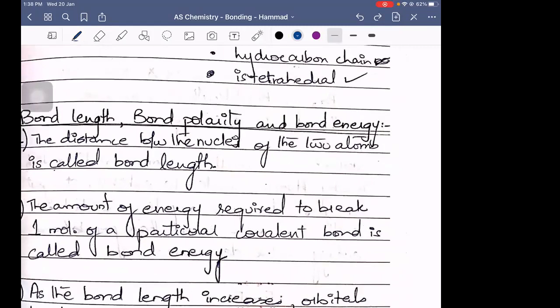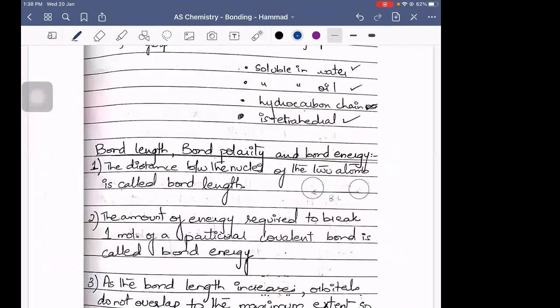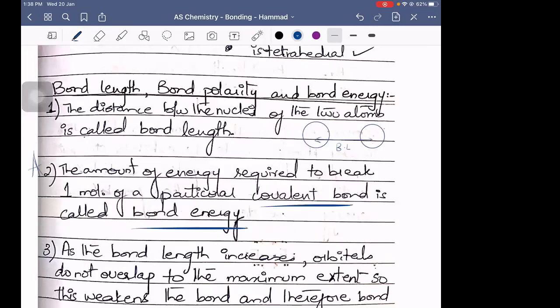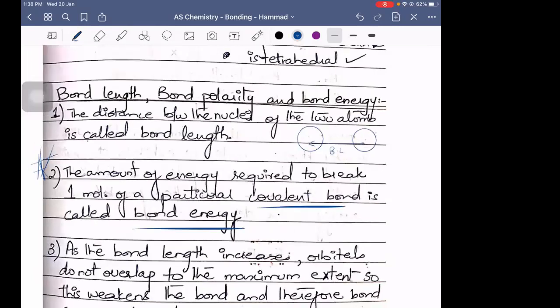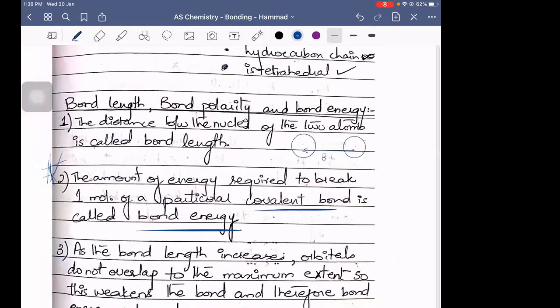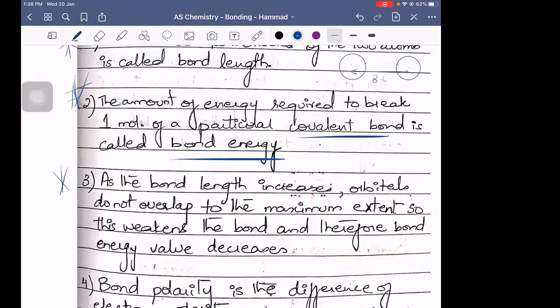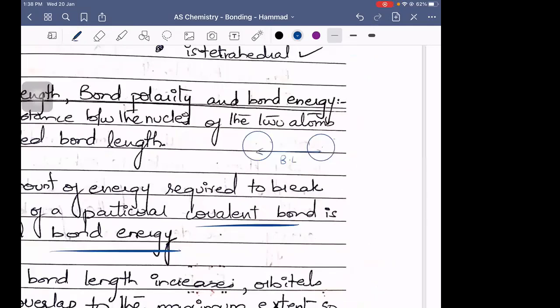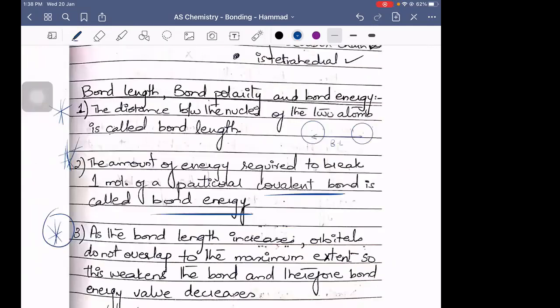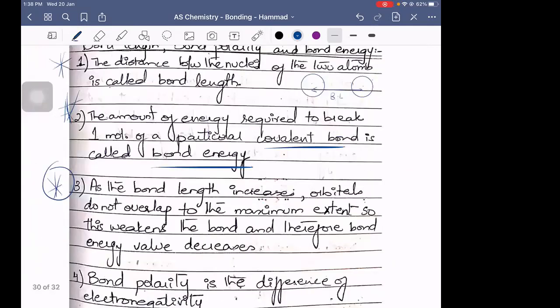The amount of energy required to break one mole of a particular covalent bond is called its bond energy. We need to learn about the definition of value. After all the work, as the bond length increases, remember that the bond length is increasing. The orbitals do not overlap to the maximum extent, and this weakens the bond, and therefore the bond energy value will always decrease.